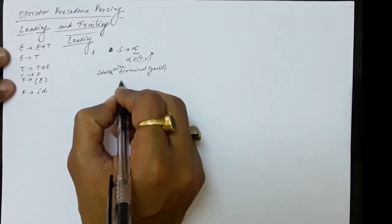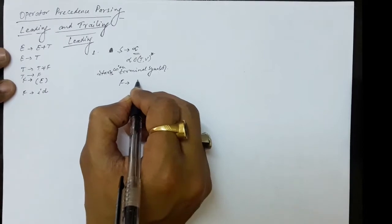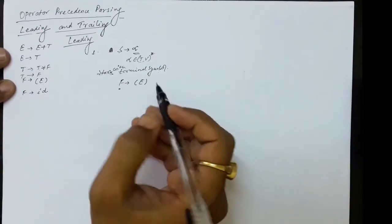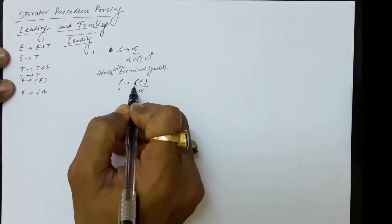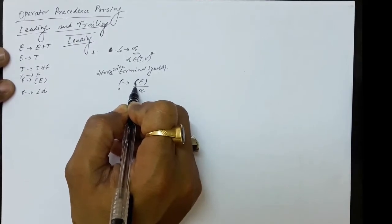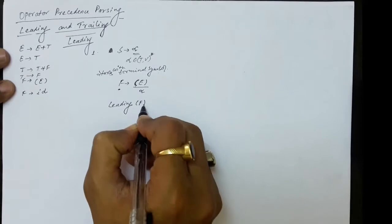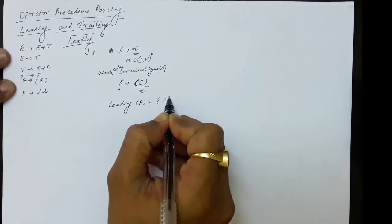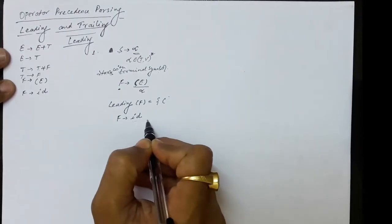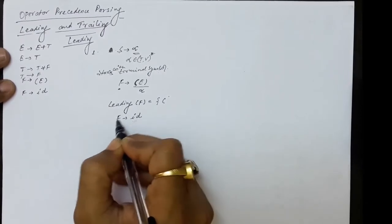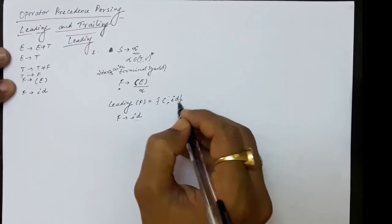For example, if we have F produces (E) and we are computing the LEADING of F, the entire right-hand side starts with a terminal symbol - the opening parenthesis. So the opening parenthesis will be in LEADING of F. For another production F produces ID, the right-hand side is just a terminal symbol, so ID will also be included in LEADING of F.